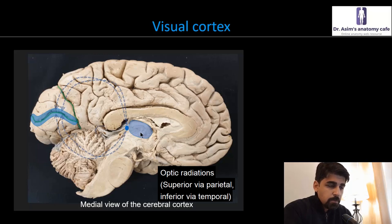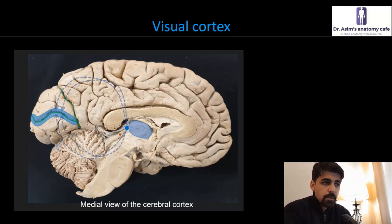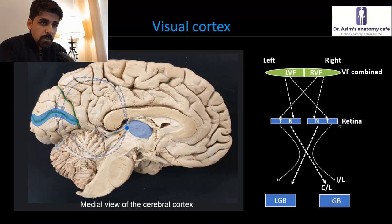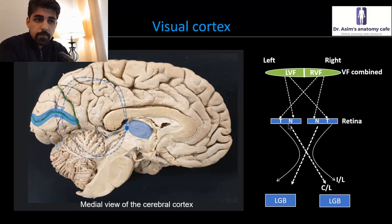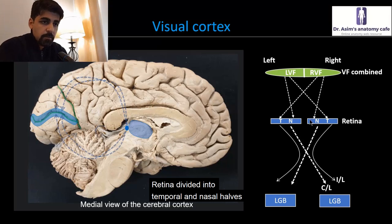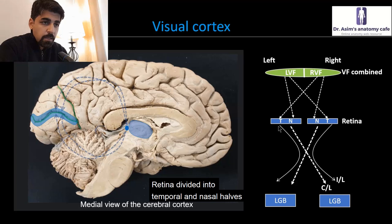Now let's look at the visual pathway in a little more detail to understand how the image on the retina gets projected onto the primary visual area. What I've drawn is a cartoonish illustration of the retina for the right eye and the retina for the left eye. We can divide the retina into an outer half known as the temporal retina and an inner half known as the nasal retina. The same applies for the left retina: a nasal half towards the side of the nose and an outer temporal half.